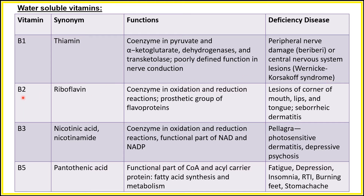Next is Vitamin B2, also called riboflavin. Its function is as a coenzyme in oxidation and reduction reactions. It is a prosthetic group of flavoproteins. Deficiency disease includes lesions at the corners of the mouth, lips, and tongue, and seborrheic dermatitis.